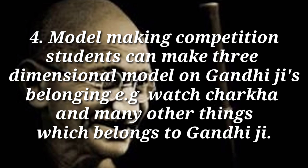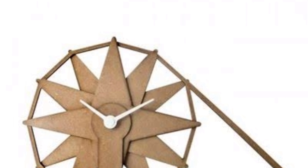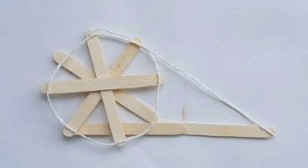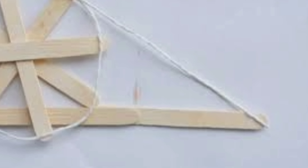Number four: model making competition. Students can make three-dimensional models of Gandhiji's belongings — for example, a watch, charkha, and many other things which belonged to Gandhiji.